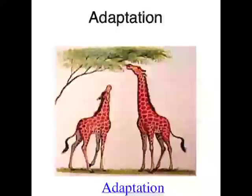A behavioral adaptation in humans is that we care for our young quite a lot. Because we care for our young, it means our young have a greater chance of survival, which means the species has a greater chance of survival. So the behavior of caring for our young is a great adaptation. So there are three types of adaptations: structural, physiological, and behavioral.